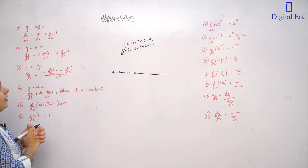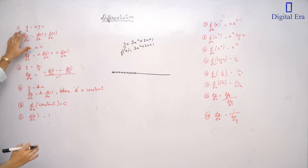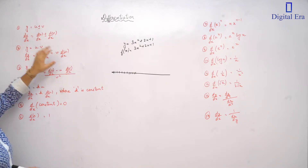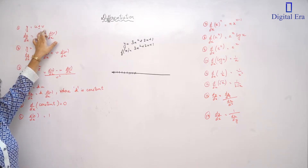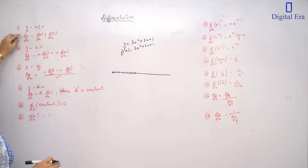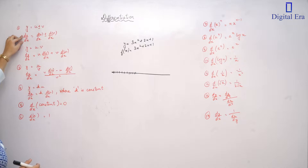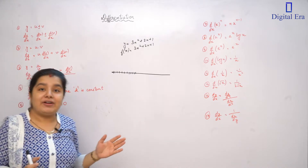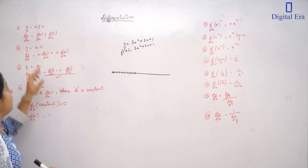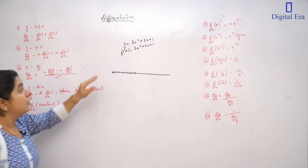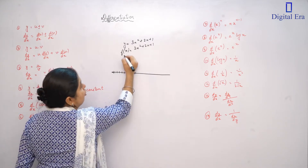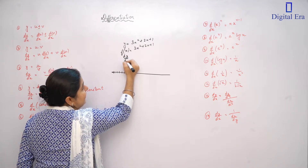So in this chapter on derivatives, one function is y, which can be u plus v or u minus v. We can write derivatives as d/dx, so we will say d/dx of y. We take the derivative of y with respect to x. The variable in the derivative must remain consistent — for example, if y is a function of x, then the derivative is d/dx of y.